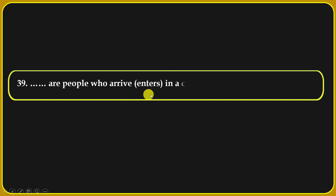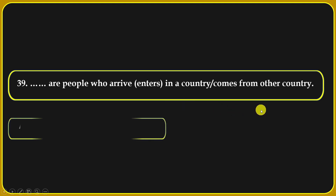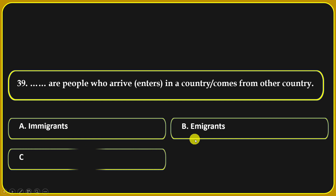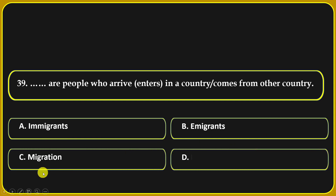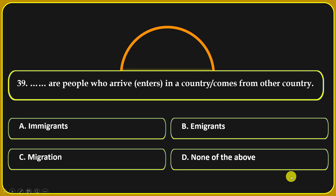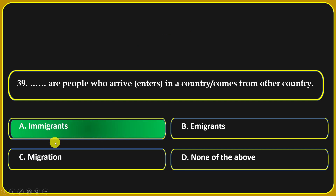People who arrive — that means enter — a country from another country are called: immigrants, migration, or none of the above. Immigrants is the correct answer.